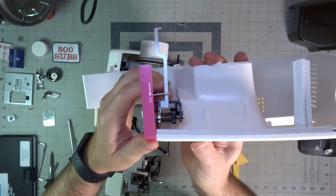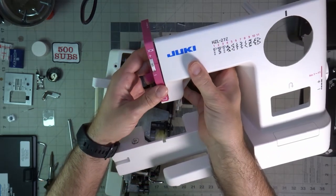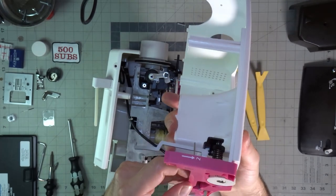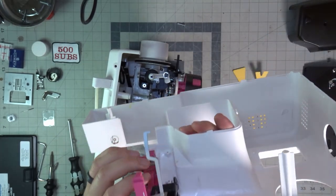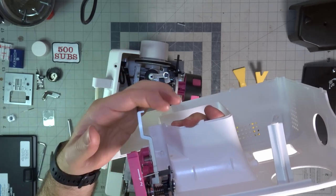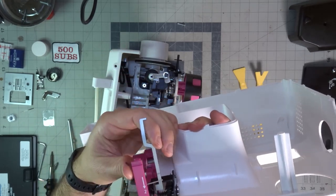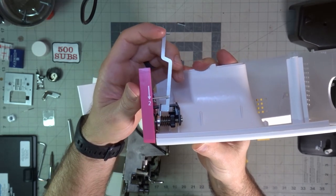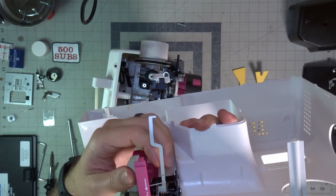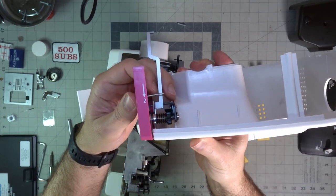So your tension assembly is right here. This is the front of the machine. Tension assembly right there. This bar, like I said, that's what is going to release your tension. It probably does that. But it releases your tension when the presser foot is raised.